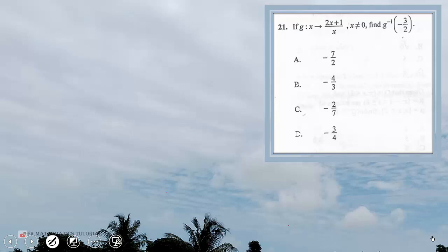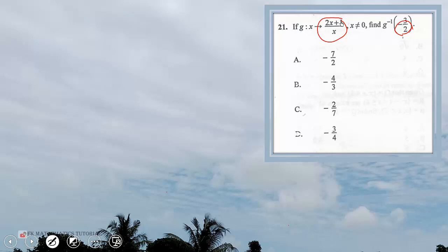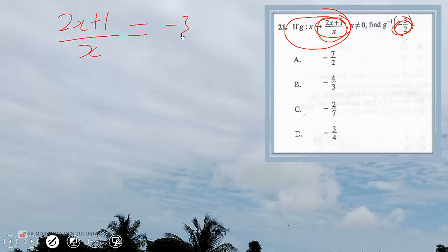The input for the inverse function is supposed to be equal to the output for the function itself, because the inverse function has that property. Another way to think of it is to find the inverse of the function, but that would be lengthy. So just equate 2x plus 1 over x to negative 3 over 2, since the input of the inverse equals the output of the function.